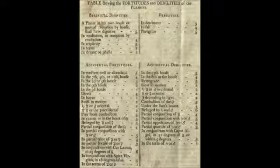Let's get started on the table showing the fortitudes and debilities of the planets. If a planet is in rulership, it will gain 5 points. If a planet is in exaltation, it will gain 4 points. If a planet is in triplicity, it will gain 3 points. If it's in term, it will gain 2 points. If it's in decan or face, which is the same thing really, it will gain 1 point.